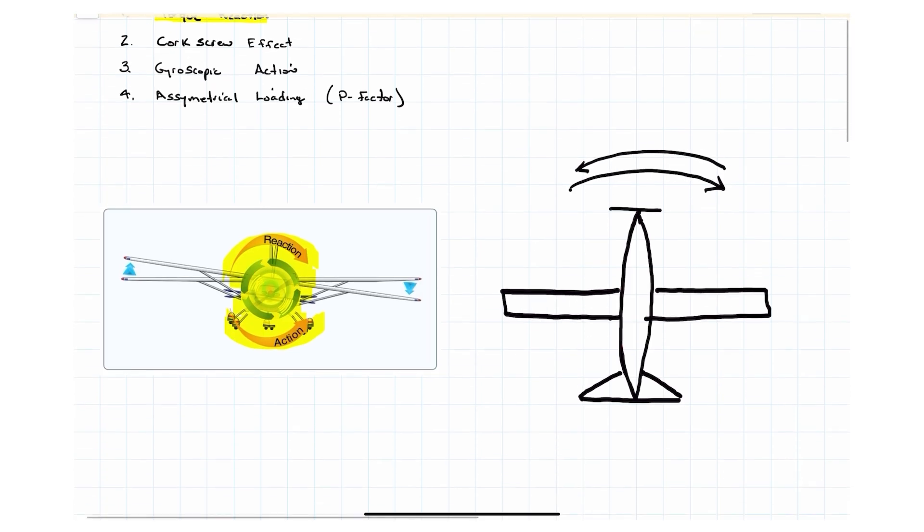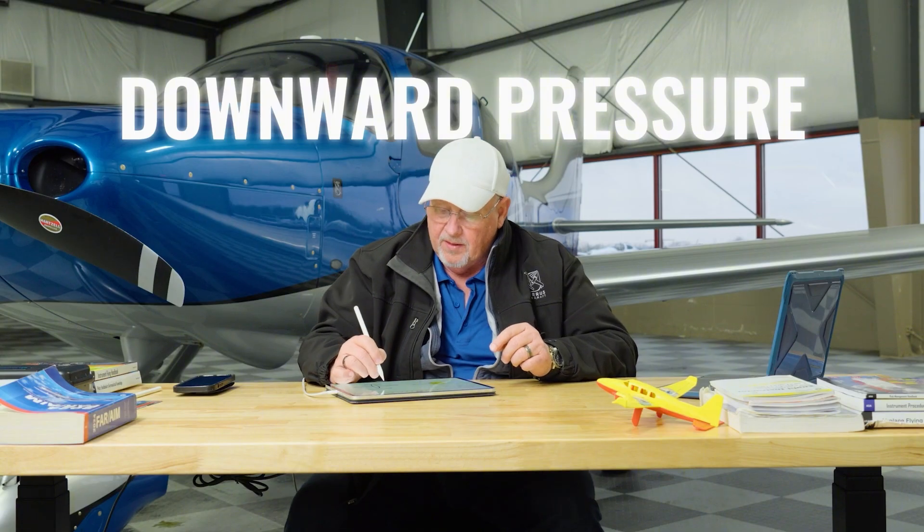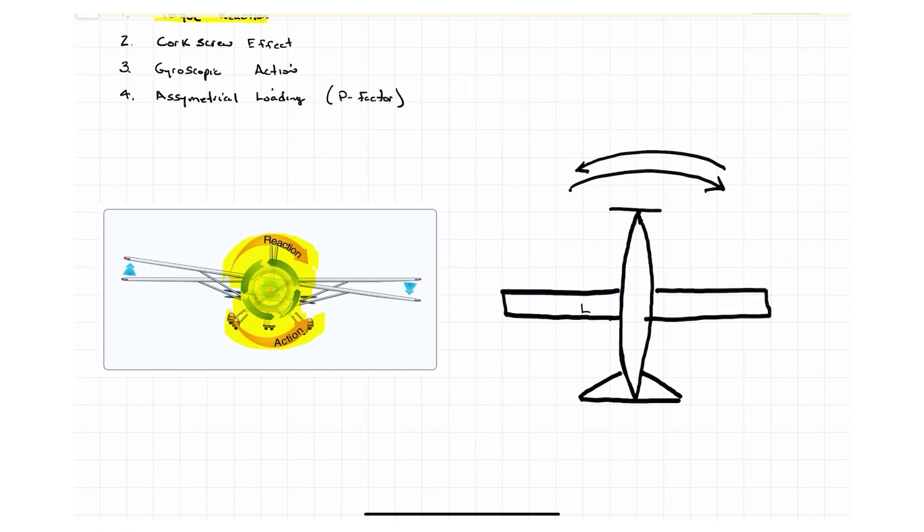So what that does is that causes a downward pressure on the left wheel, the main. So you get the downward pressure on the main and that downward pressure that comes right here on this wheel, that causes a ground friction that causes that side to drag back somewhat. The other side isn't going to have as much ground friction on it. It's not going to drag the plane back as much.